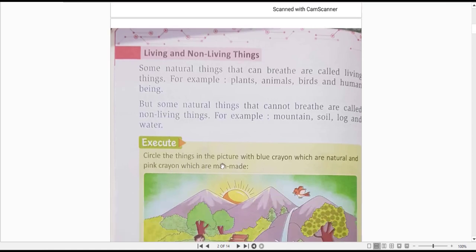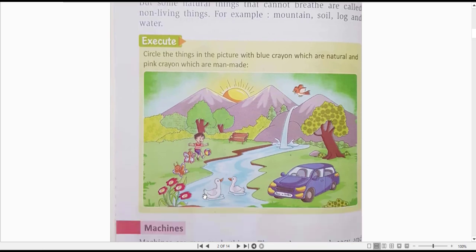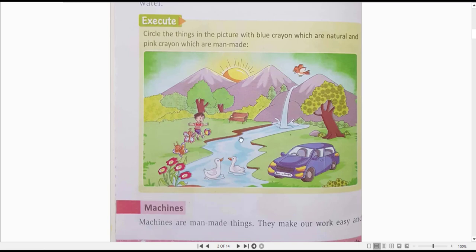Execute. Circle the things in the picture with blue crayon which are natural and pink crayon which are man-made. Yahaan par aapko yi picture given hai. Jitni bhi natural chizhe unko aap blue color ke crayon se circle ki jiye. Or joh man-made thing hai unko pink color ke crayon se circle ki jiye. Lekin jab aap notebook mein karenghe toh aapko yi picture draw karna ki nahi hai. Biech mein se line draw karke ek side aap likhenghe natural things aur dousri side manmade things.